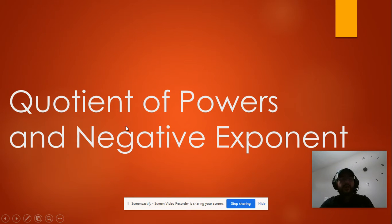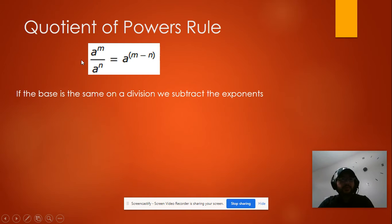Today we're going to learn about the quotient of powers and the negative exponent. Let's see the rule. The rule of the quotient of power says that if the base is the same and we are doing a division, if the base is the same, we just subtract the exponent.